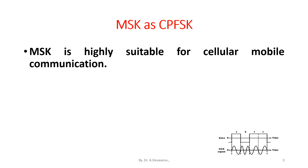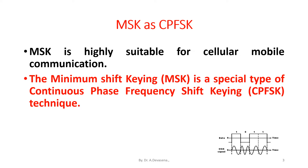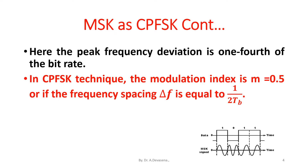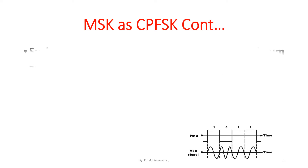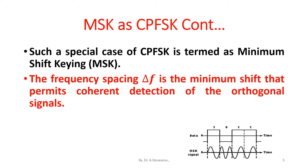MSK is highly suitable for cellular mobile communication. Minimum shift keying MSK is a special type of continuous phase frequency shift keying CPFSK technique. Here the peak frequency deviation is one-fourth of the bit rate. In CPFSK technique the modulation index H is equal to 0.5, or the frequency spacing delta-f is equal to 1 divided by 2T_b (bit duration). Such a special case of CPFSK is termed as minimum shift keying. The frequency spacing delta-f is the minimum shift that permits coherent detection of the orthogonal signals.